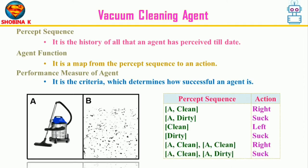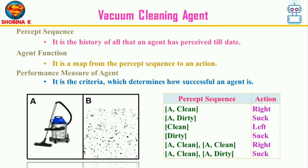Consider a simple vacuum cleaning agent with two tiles, A and B. Dust could be on either, both, or neither. The vacuum cleaner senses and cleans one tile at a time and can move left, move right, or clean the tile it rests on. The percept sequence consists of the history of percepts from the vacuum's sensors, and an agent function maps each percept into an action. We need a performance metric to measure the agent's success — here, it is the number of desirable actions performed. If a different agent function is used, it may perform undesirable actions and have a lower performance measure.